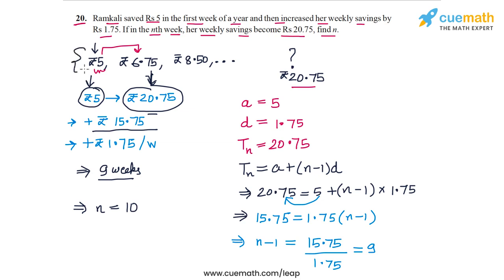So in this AP that we wrote for weekly savings every week, the term 20.75 comes at index 10, and this means as we saw earlier that in week number 10 the weekly savings will become rupees 20.75. So make sure that you understand the difference between this 9 and this 10.